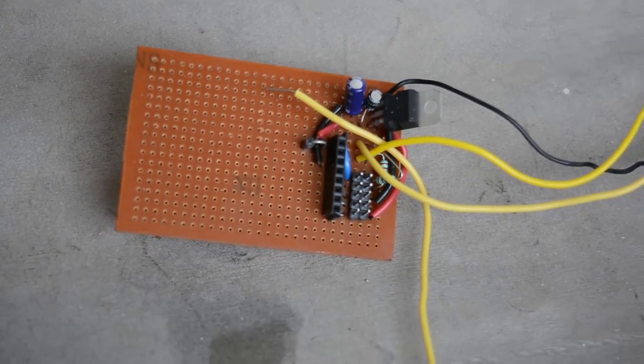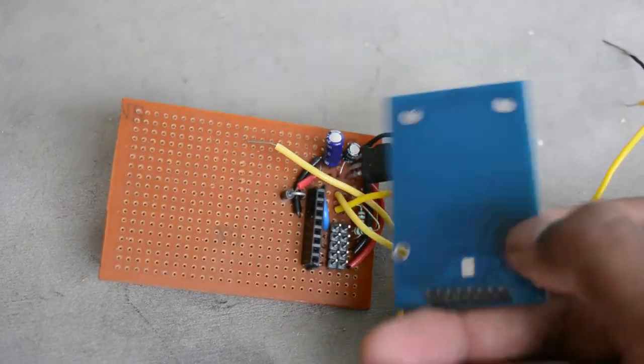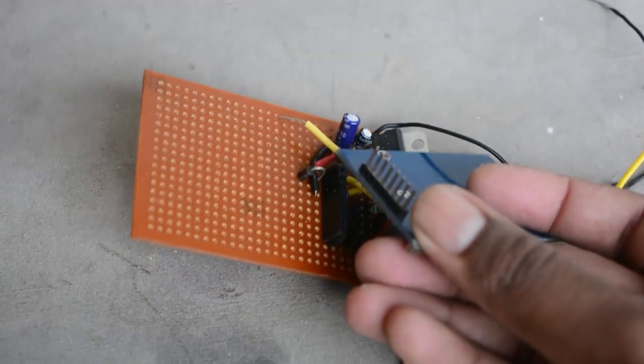This is the RFID reader, the MFRC 522 chip. I will put down a link in the description if you want to buy one of these.